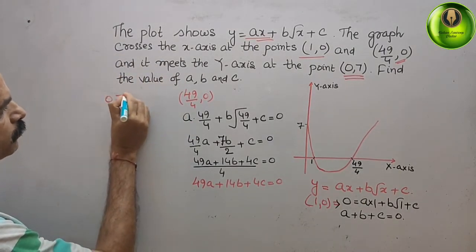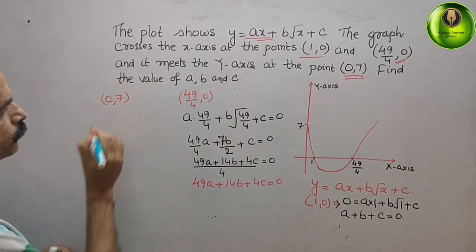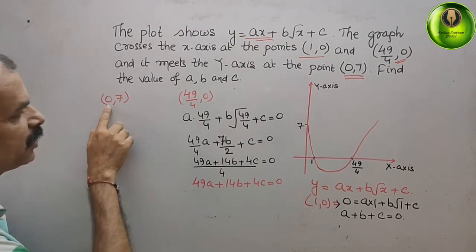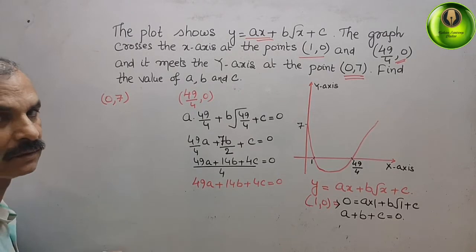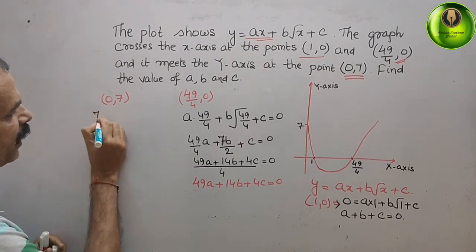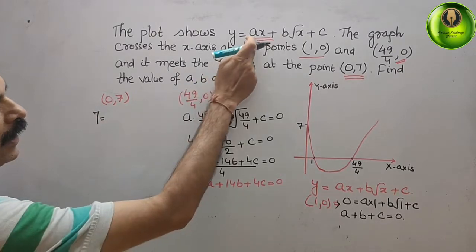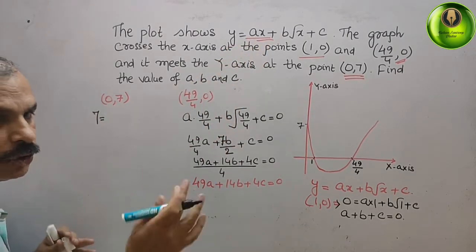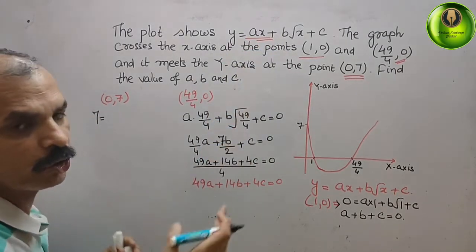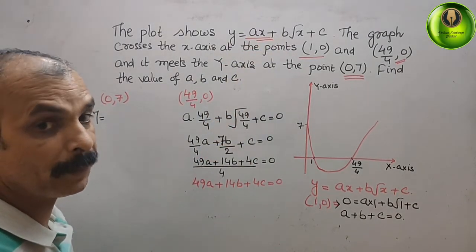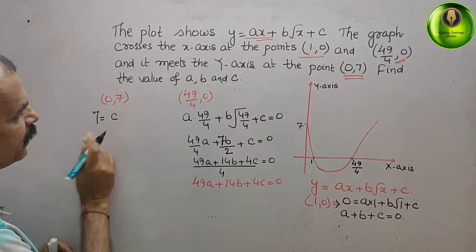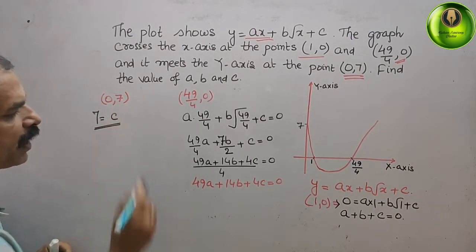Now substituting the third coordinate (0, 7): x = 0 and y = 7. We get: 7 = a(0) + b(0) + c, which gives c = 7.